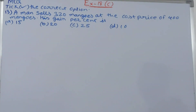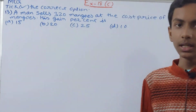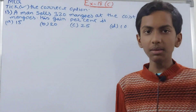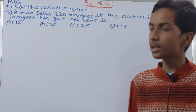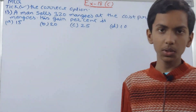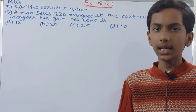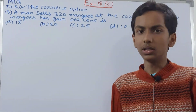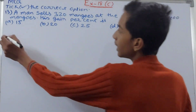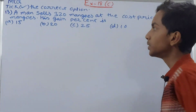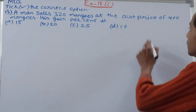So he is selling 320 mangoes at the cost price of 400 mangoes. There are many ways you can solve this question — you can either assume the price to be x, or you can take it as one. I will take it as one. In these types of questions, you have to assume the cost price as one.